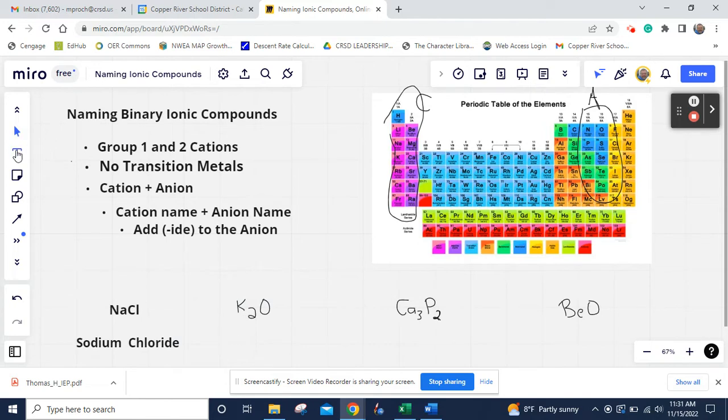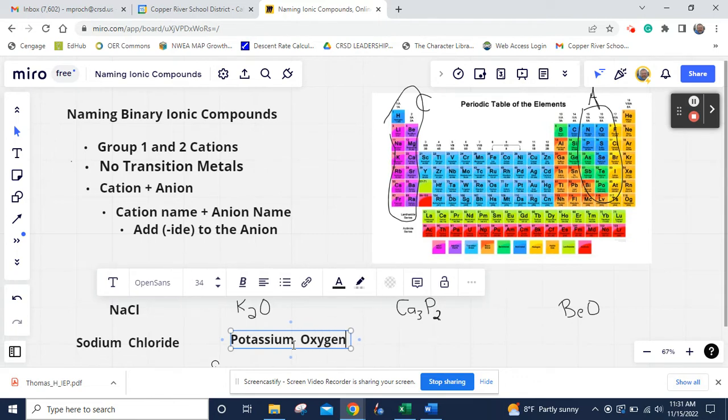We're going to look at the next one now. So we're going to take K2O. We look at the first one, K. It's going to be right here, group one. And we know that's potassium. The next one is oxygen. So we add oxygen, then we want to add the suffix on, and it's potassium oxide.